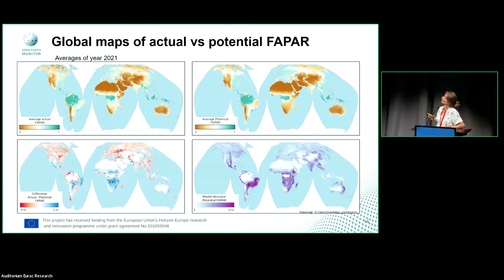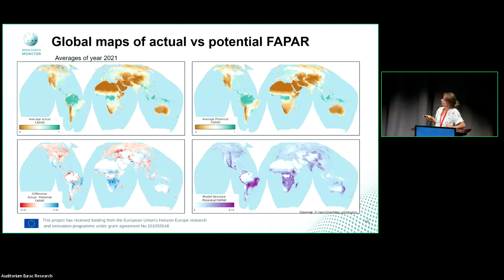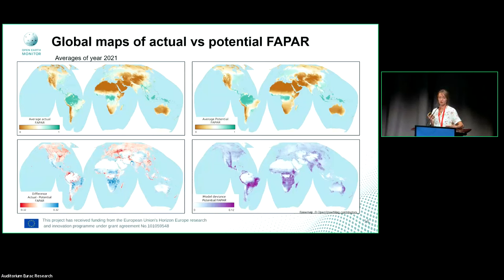On the left, you see the potential subtracted from the actual — red values mean that the potential is lower than the actual. On the right is the model deviance from the ensemble model for the predictions. Many savannah areas show a potential lower than the actual, but looking at the model deviance map, those same areas also have a high deviance value — so it's important to be cautious about the results. On the other hand, areas where actual FAPAR is lower than potential have generally lower model deviance, as in Europe, for example.